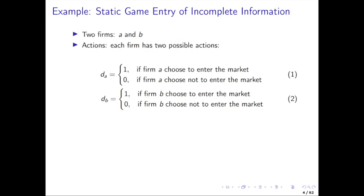Here's the game we're considering — it's very simple. There are two firms, A and B. Each firm makes two possible actions: they decide whether or not to be in the market, captured by binary indicator D_A, which takes the value of one if firm A enters the market, and likewise D_B for firm B — one for entry, zero for not entry. It's a game because the payoffs of those two firms depend on the actions of their opponents.